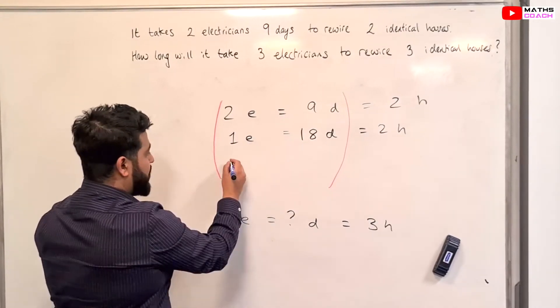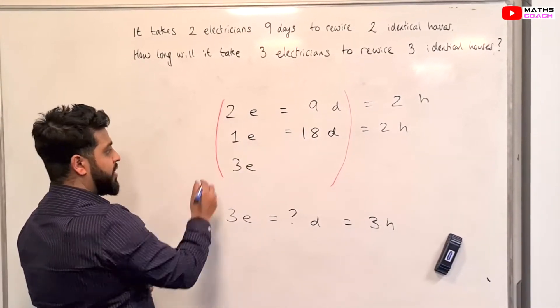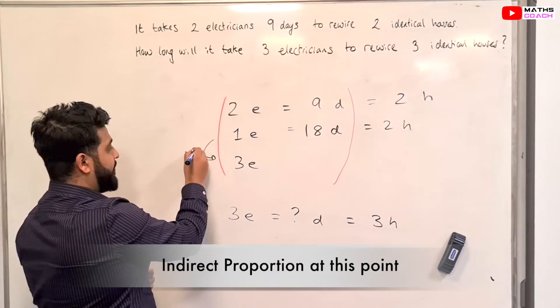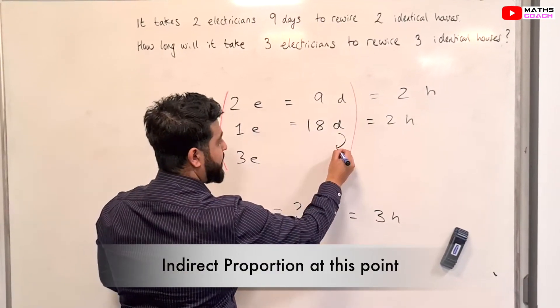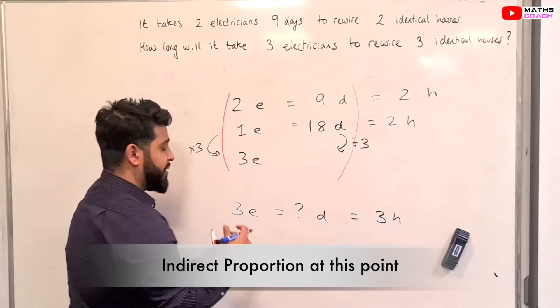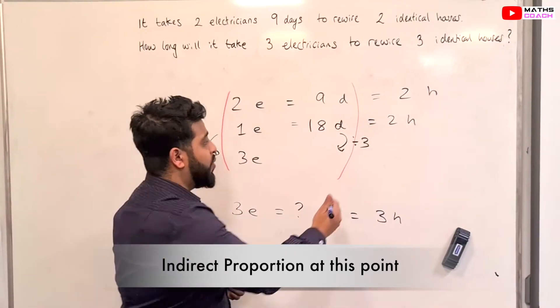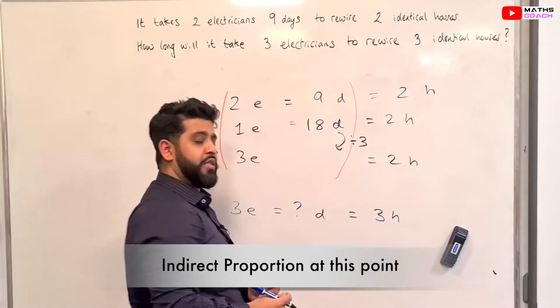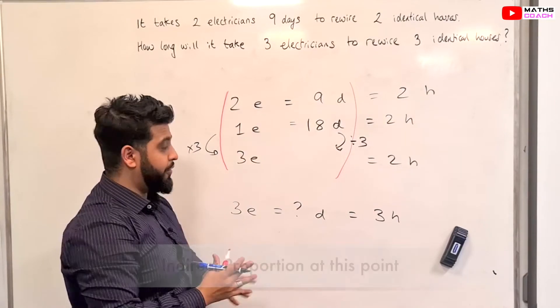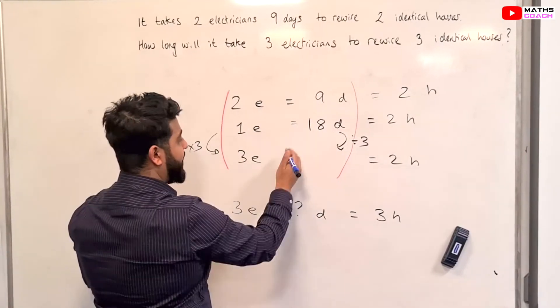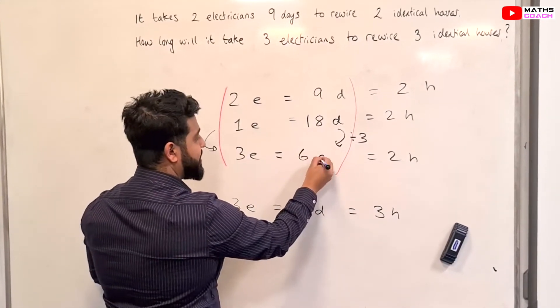Now, we're going to go from 1 to 3 electricians by multiplying here by 3 and therefore we are going to divide this side by 3 because we've got more people on site working on 2 houses. So, 18 divided by 3, that gives us 6 days.